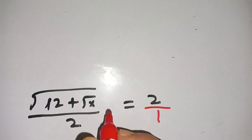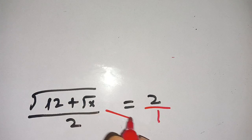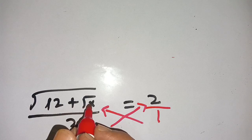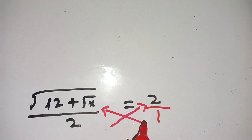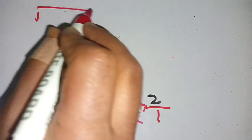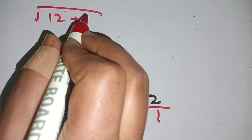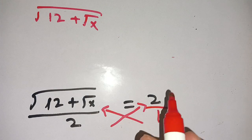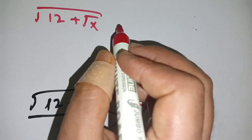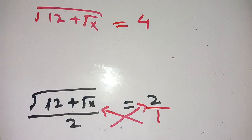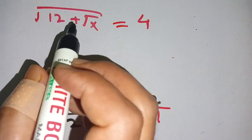On cross multiplication we get square root of 12 plus square root of x times 1 equals 2 times 2, which becomes 4. Thus square root of 12 plus square root of x is equal to 4.